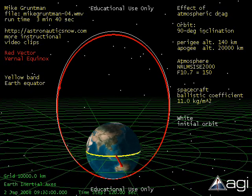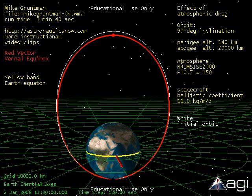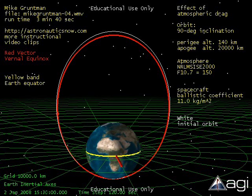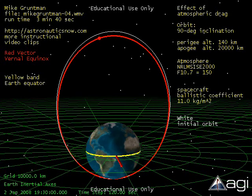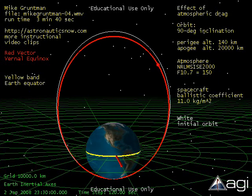The initial orbit in our example is elliptical with perigee altitude 140 km and apogee altitude 20,000 km. The color of the current orbit is red. The color of the initial orbit is white.